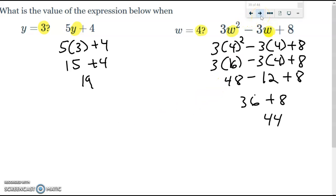Now, on this one, you should get 44. So, 4 squared. We'll plug in 4 first. And then you got 4 squared. That's 16. 3 times 16 is 48. Negative 3 times 4 is negative 12. Bring down the 8. 48 minus 12 is 36. And 36 plus 8 is 44.